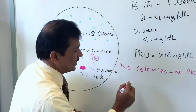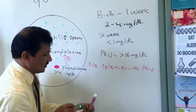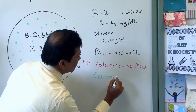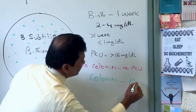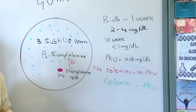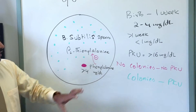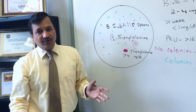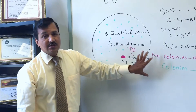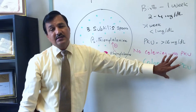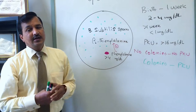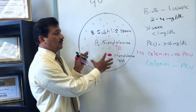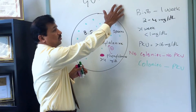The appearance of bacterial colonies is a positive sign — presence of colonies means PKU is suspected. So the negative test means no colonies and the baby is fine; a positive test means colonies are present and the baby is suspected to have phenylketonuria. This Guthrie test is a screening test.